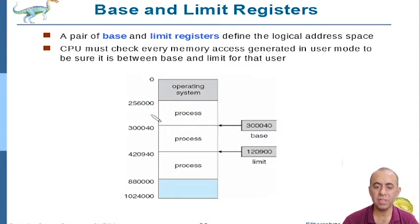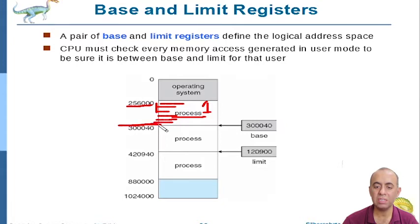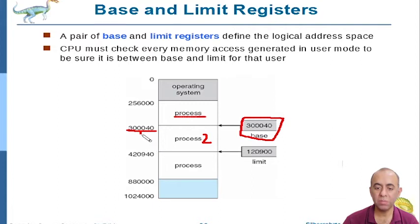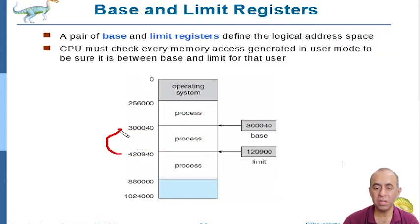In this picture, the operating system starts at zero and ends at some address. From the next address — say 256,000 — the first process starts and occupies different locations. Let's call it process one. A process can span multiple addresses: one hundred, two hundred, three hundred, five hundred, and so on. Process two starts from its own address, which we call the base address, and goes up to another address. The difference between these two numbers — which is the size of the process — is called the limit.